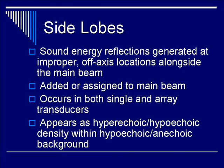Side lobes describe sound energy reflections that are generated at improper off-axis locations alongside the main beam. They're added to or assigned as part of the main beam and occur in both single and array transducers. Some authors quote that side lobes can only be seen in single plate transducers, but it's well documented that you can see them also in array transducers. Side lobes appear as hyperechoic or hypoechoic densities within a hypoechoic or anechoic background, such as a bladder.